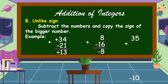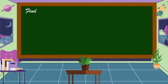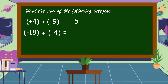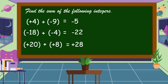Another example: 35 plus negative 10. 35 is positive and 10 is negative, so we subtract: 35 minus 10 is equal to 25. Now let's apply what you learned — find the sum of the following integers. Positive 4 plus negative 9 equals negative 5. Negative 18 plus negative 4 equals negative 22. Positive 20 plus positive 8 equals positive 28.